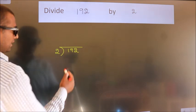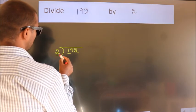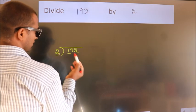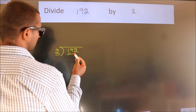Next. Here we have 1, here 2. 1 smaller than 2. So we should take 2 numbers, 19.